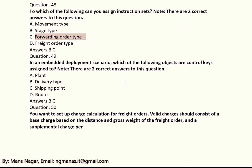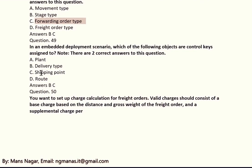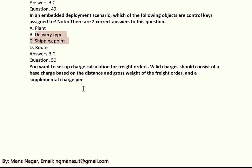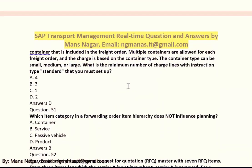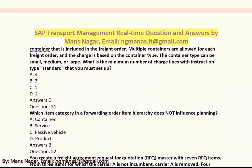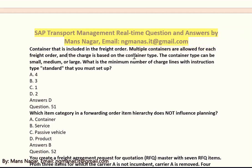In an embedded deployment scenario, which of the following objects are control keys assigned to? The answers are B and C: delivery type and shipping point. You want to set up charge calculation for a freight order. Valid charges should consist of a base charge based on distance and gross weight of the freight order, and a supplement charge per container included in the freight order. Multiple containers are allowed per freight order, and the charge is based on container type: small, medium, or large.